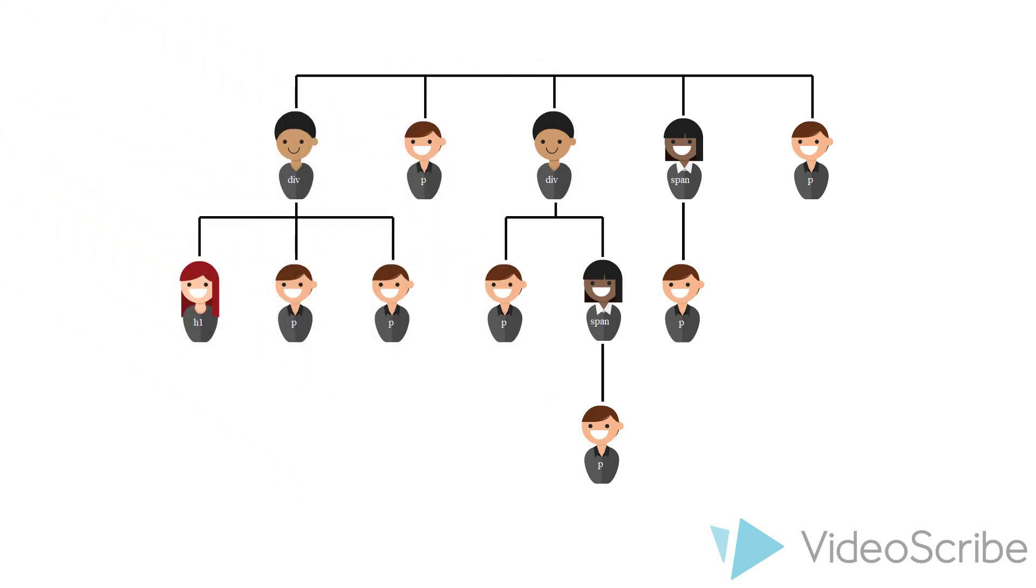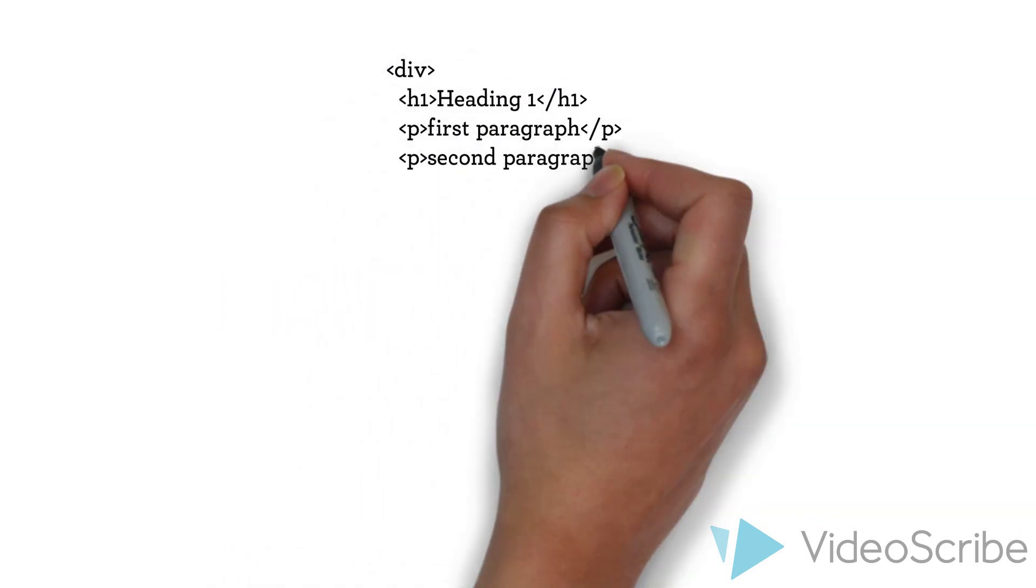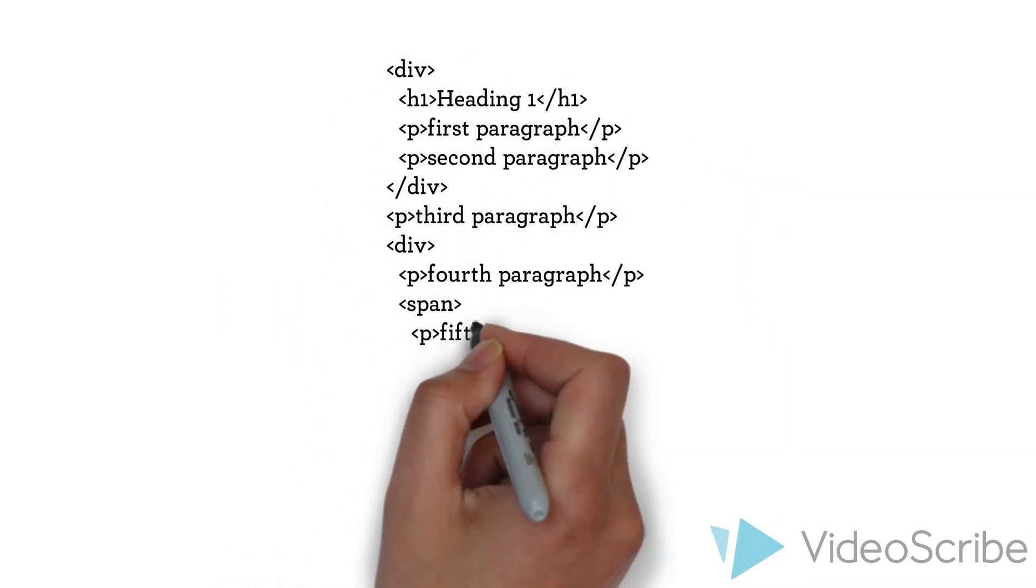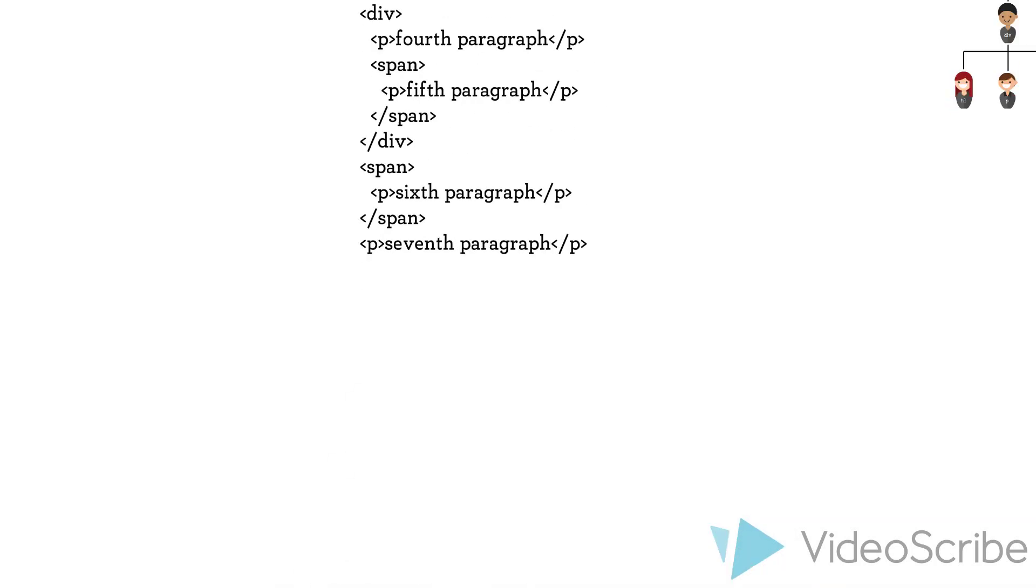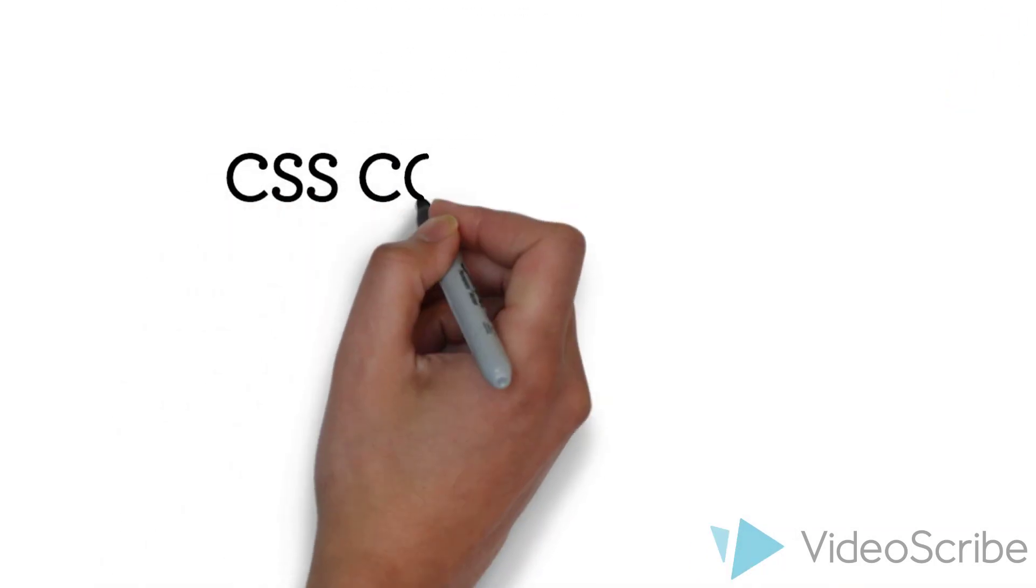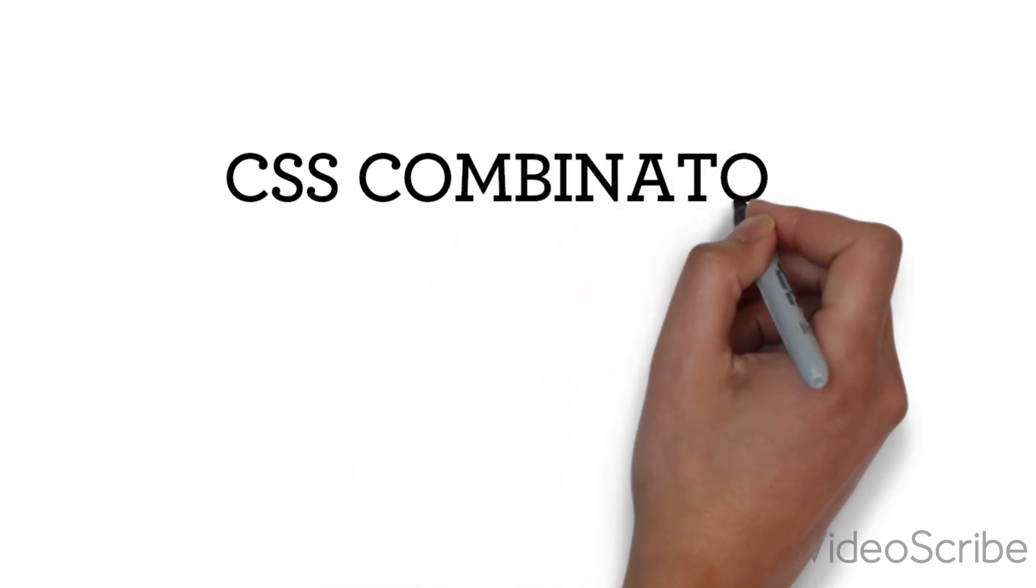Family. To be more clear, relations between family members. In order to understand this video you should have basic HTML and CSS knowledge. But let's start with clearing the term combinators. What are they and when do we need them?